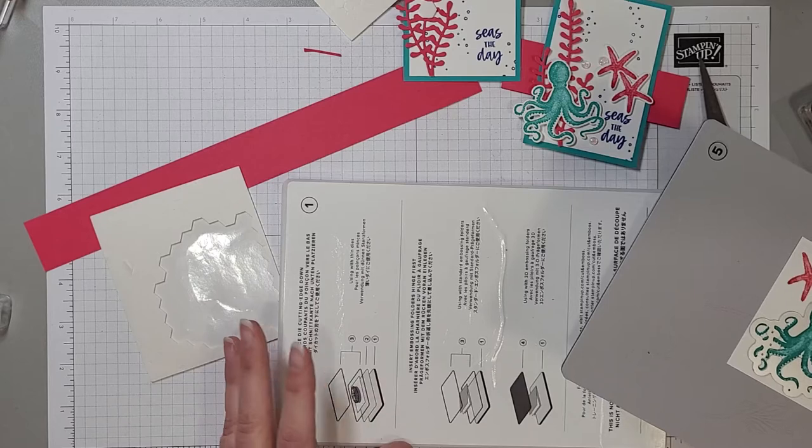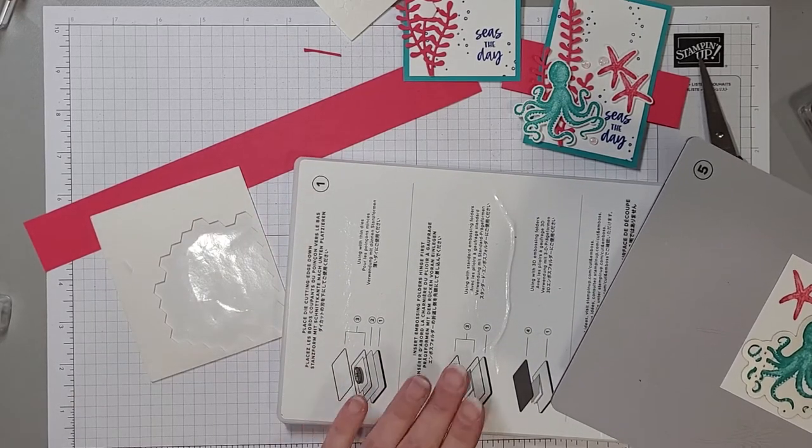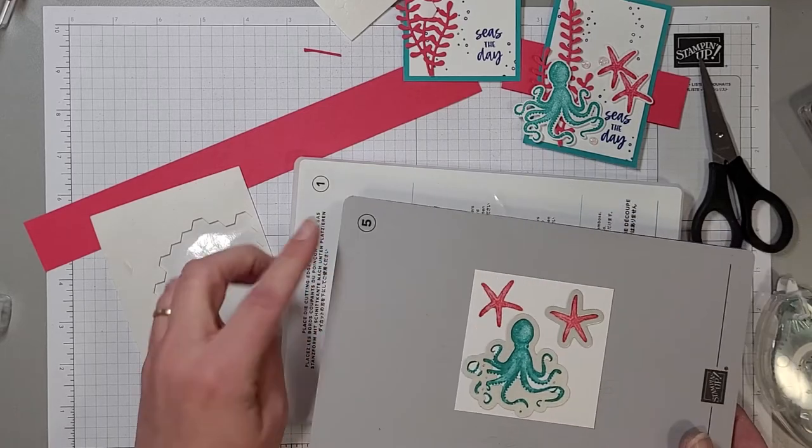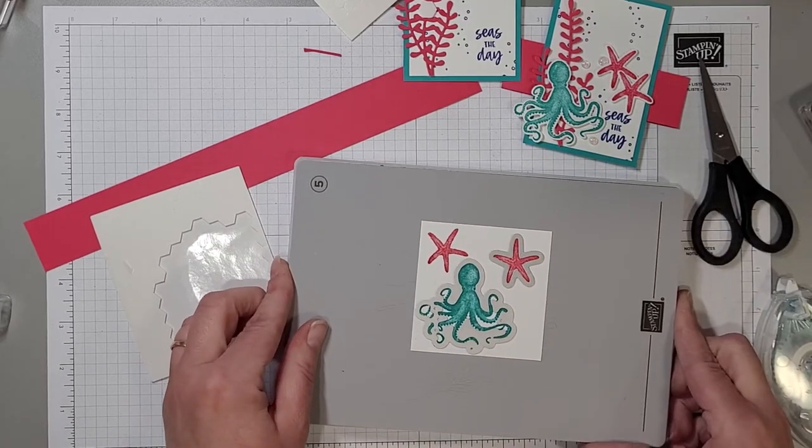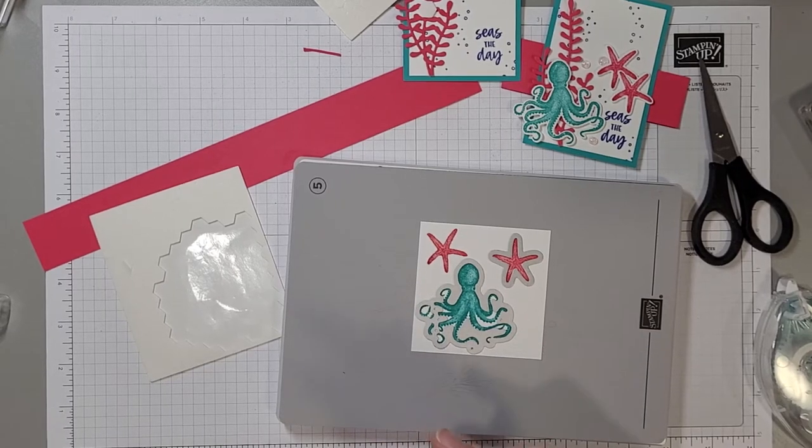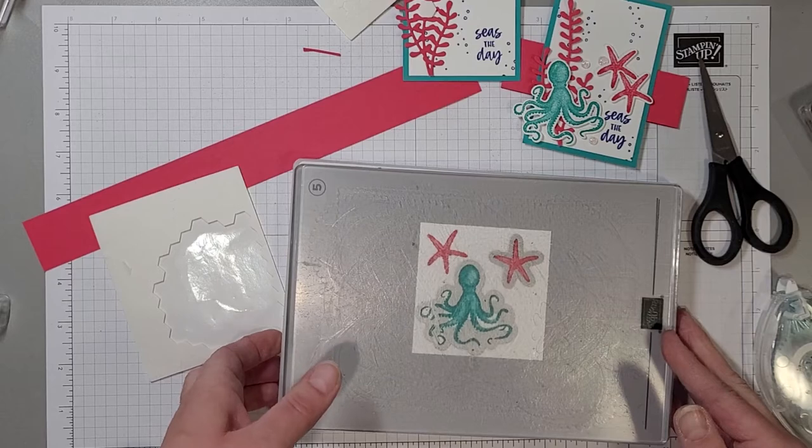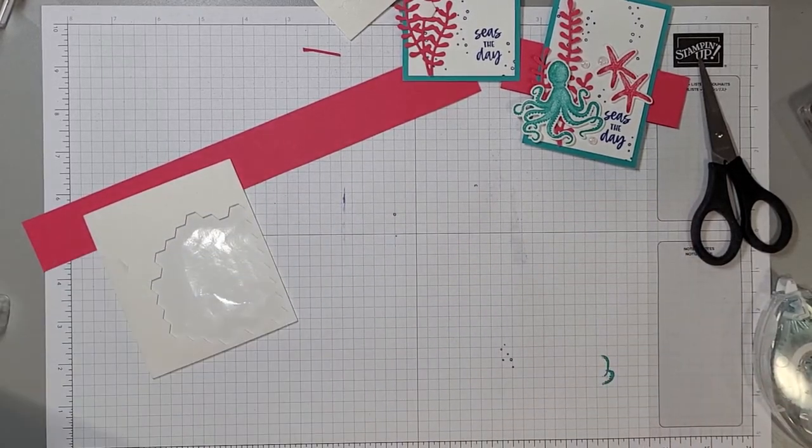The sandwich for our Stamp Cut and Emboss machine is our base plate, number one, number five magnetic plate, and then number three clear on the top. So we'll go ahead and we'll wheel that through the machine.